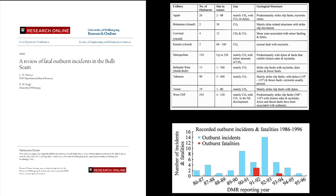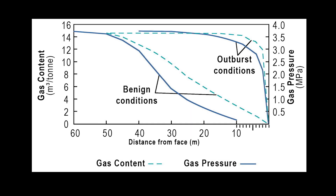An analysis of 461 outbursts in the Bull Eye Seam near Wollongong over a 100-year period found that all of the outbursts involved mining near or through a geological disturbance. Provided a minimum distance was maintained from the structure, an outburst would not occur. The safe barrier from the geological structure varies between one and two and a half metres in the Bull Eye Seam.